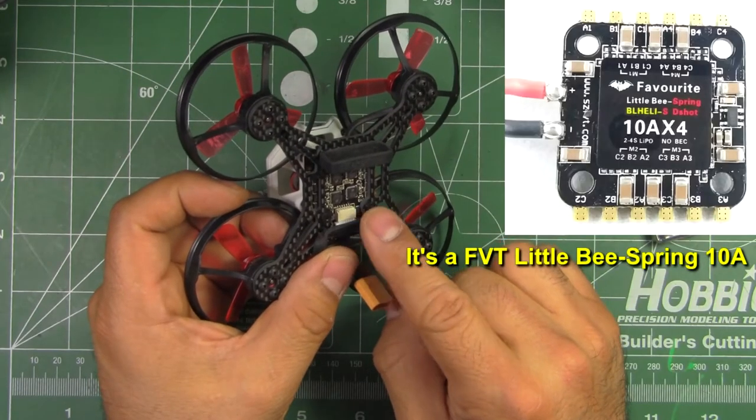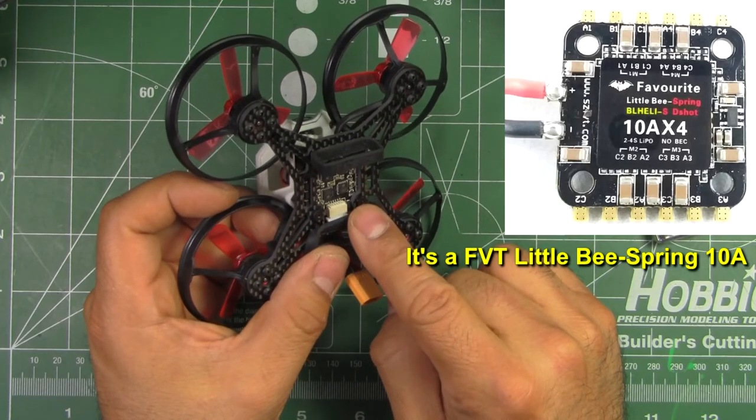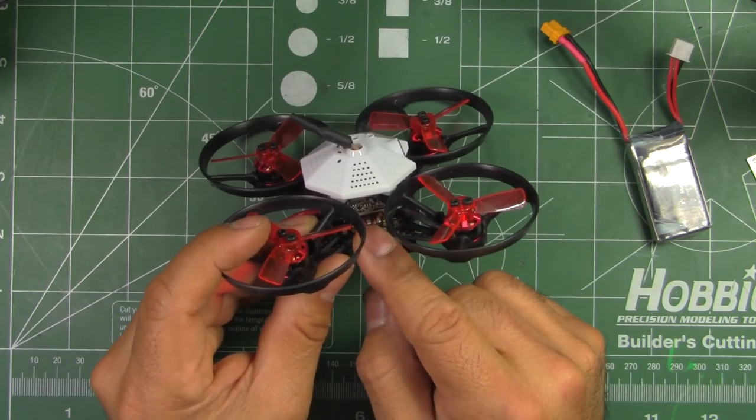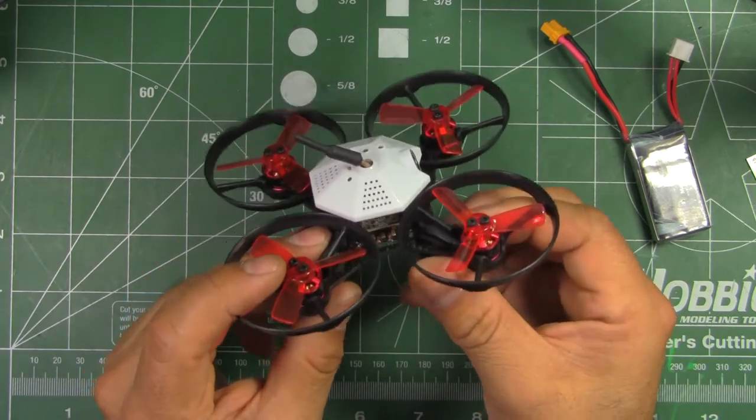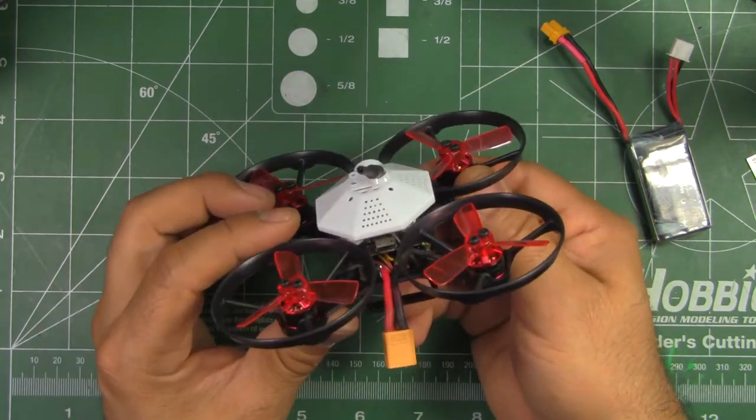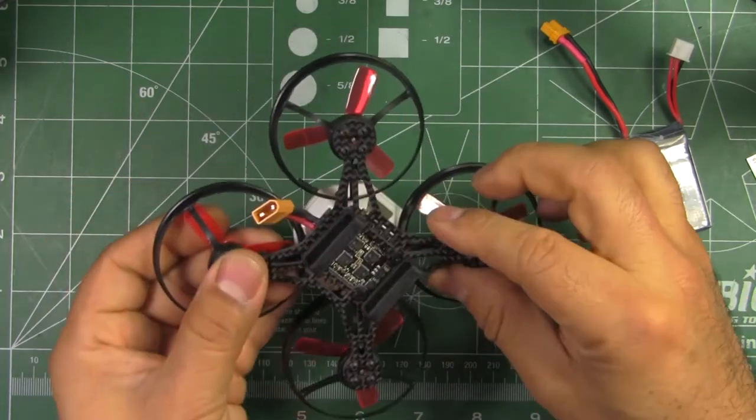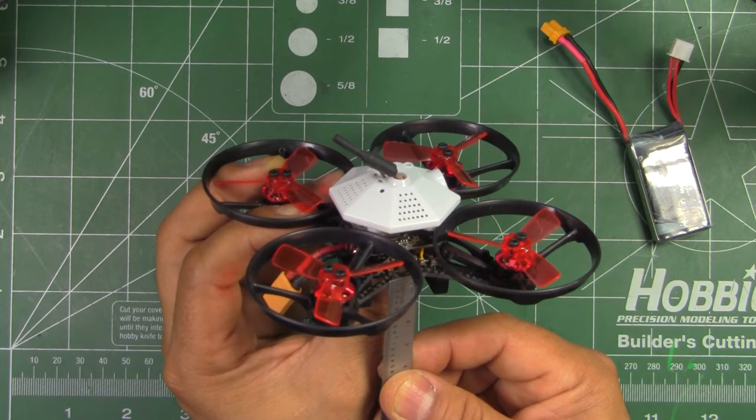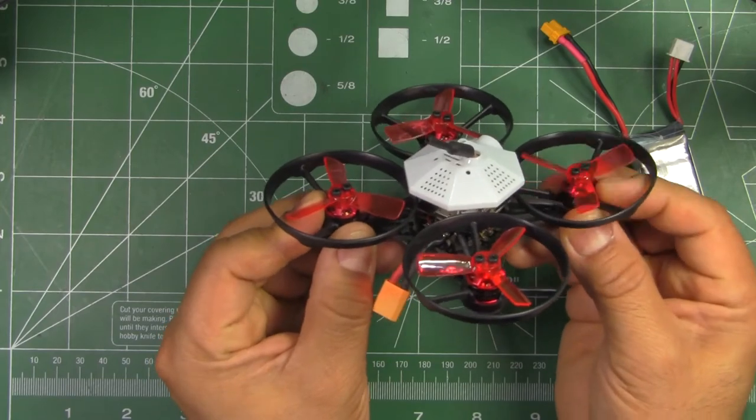The 401 ESC is supposed to be a BLHeli S. I believe they're 10 amps and they can do D-shot. The FC is an F3 base and it uses the Omnibus target, so it's got a built-in OSD. So that's quite neat. You'll be able to see voltage, you'll know when the battery's low. So overall, pretty well made I think. The frame is carbon fiber. Looks like it's two and a half millimeters thick, so pretty good thickness and it's fairly stiff.